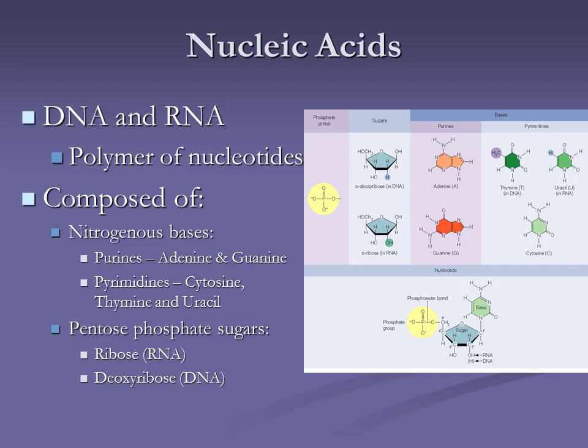The four nucleotides are not exactly the same because there are two groups. Some have a rather small ring-like structure, whereas others have a larger two-ring type structure. These are the purines and the pyrimidines.